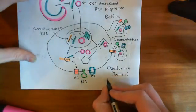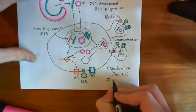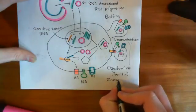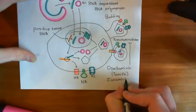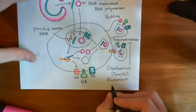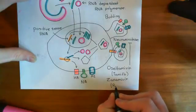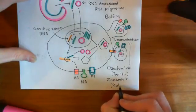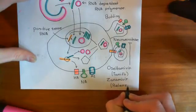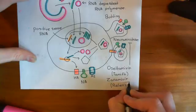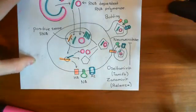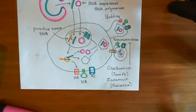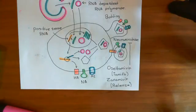A drug which does the same thing is zanamivir, with the brand name Relenza. Both of these drugs block the neuraminidase enzyme from functioning. The influenza particles then remain tethered to the host cell that they've just left, and it stops the spread of the virus hugely.